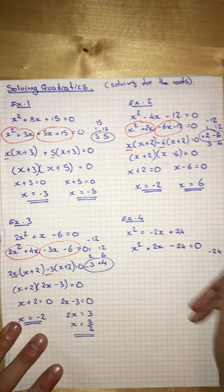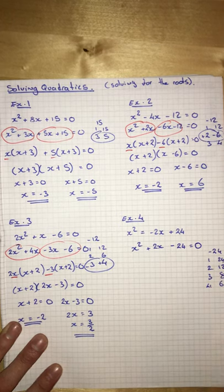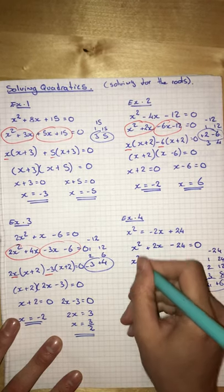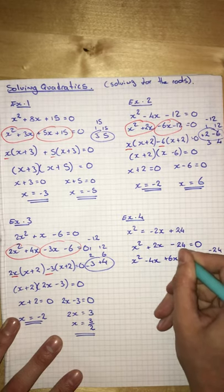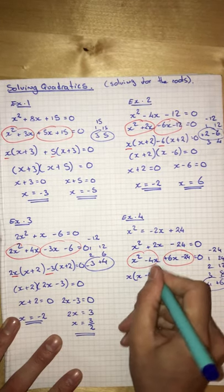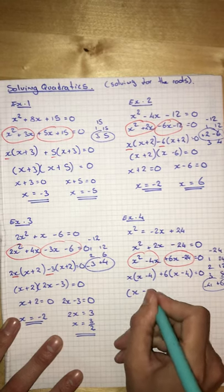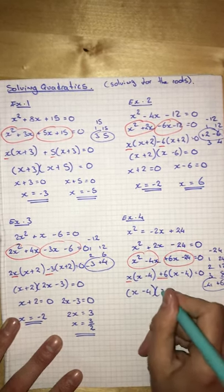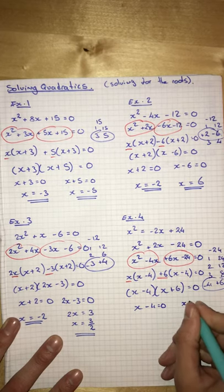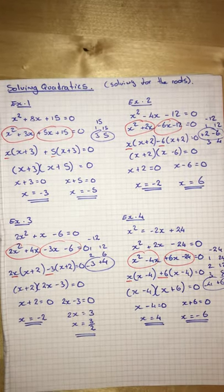1 times 24 is negative 24. Let's make plus 2, so it's going to be positive 6, negative 4. So we have x squared minus 4x plus 6x minus 24 equals 0. We get x bracket x minus 4 plus 6 bracket x minus 4. And then we can take out that that's going to be x minus 4 and x plus 6. So that means x minus 4 equals 0 and x plus 6 equals 0. So that means x equals 4 and x equals negative 6. So that is how you solve quadratics.